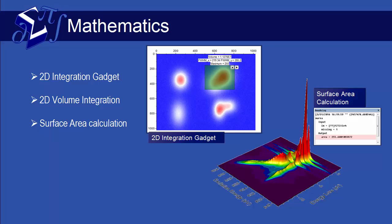In the area of mathematical analysis, Origin Pro supports advanced tools for 2D data, including volume integration, area calculation, and a gadget for examining 2D peak properties.